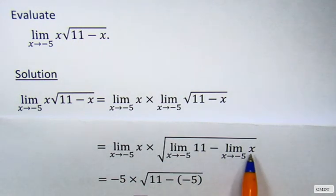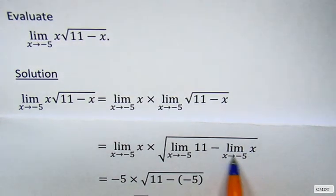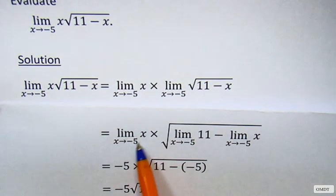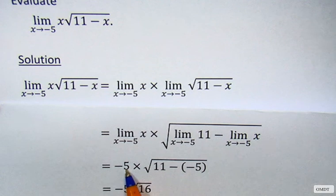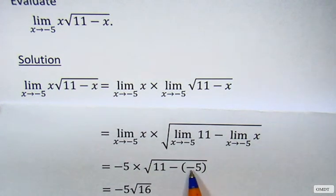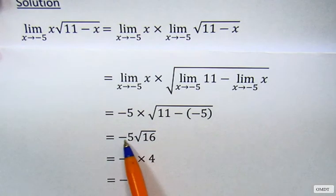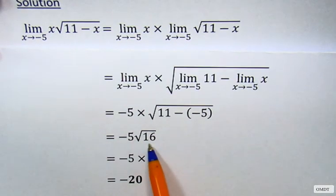approaches -5 of x. Now we can remove the limit signs and replace x with -5, so we have -5 times square root of 11 minus (-5), which simplifies to -5 times square root of 16.